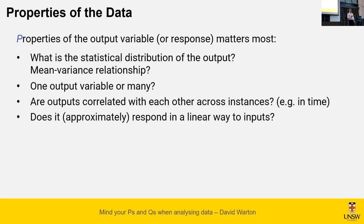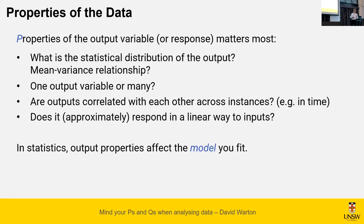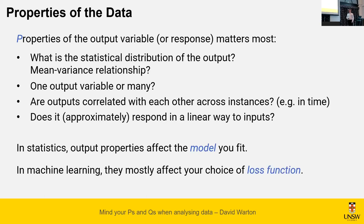Those are a couple of examples of data properties that can be important — if you don't account for them it can mess with your results. Key things worth thinking about: what's the distribution of your output variable, in particular the mean-variance relationship; do you have many outputs or just one; are they correlated with each other? From a machine learning perspective these properties should affect your choice of loss function — mean squared error is not a good choice if you've got big changes in variance between different observations.